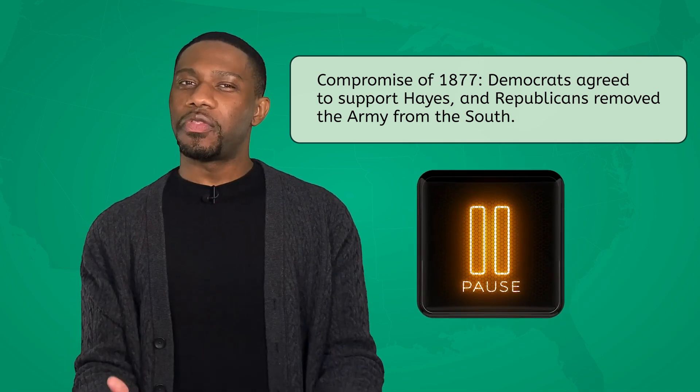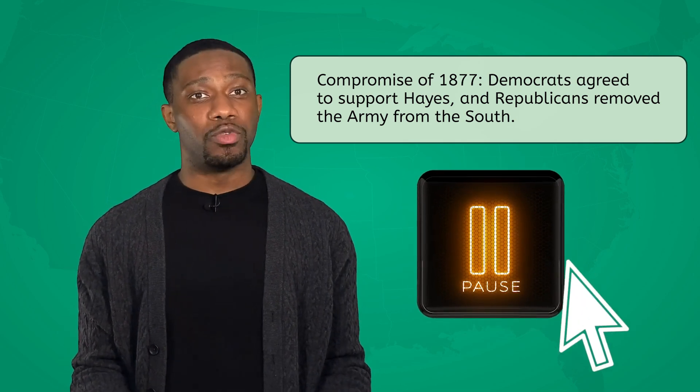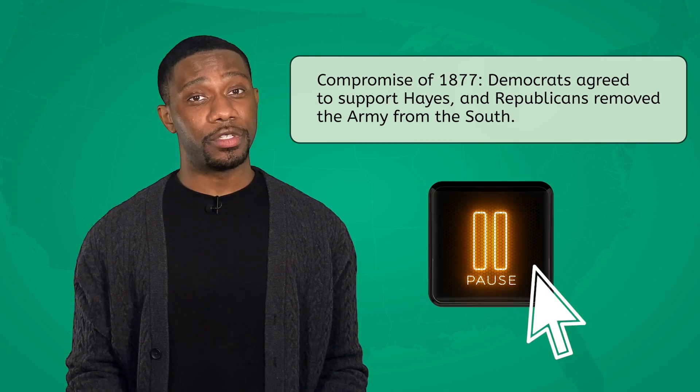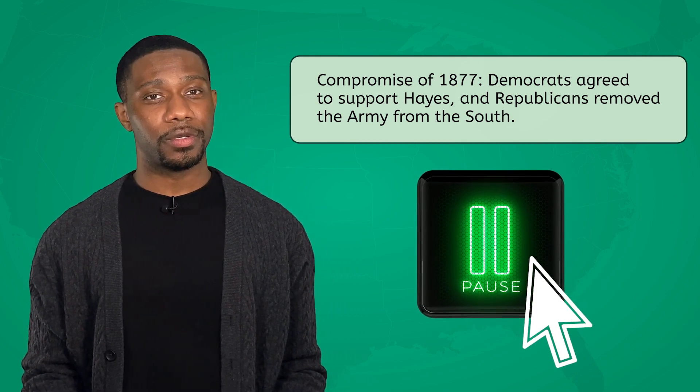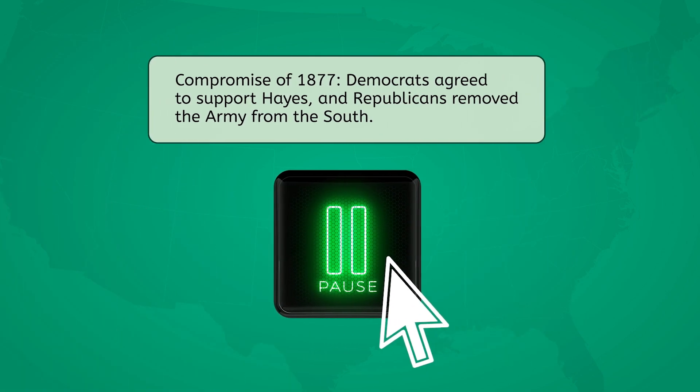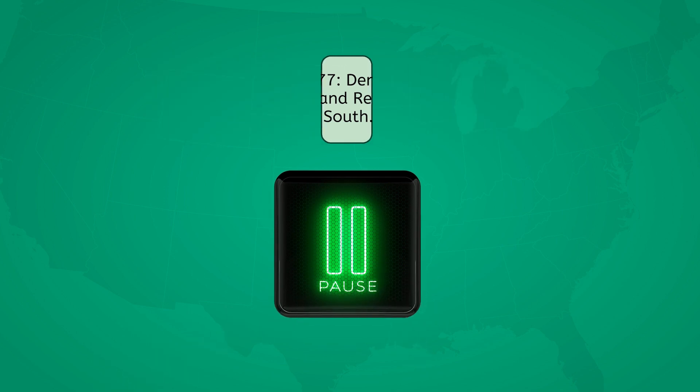Now how do you think this compromise would impact Reconstruction efforts? The compromise showed the Republican Party was shifting its focus, becoming less committed to civil rights and equality for Black Americans, marking the end of Reconstruction.